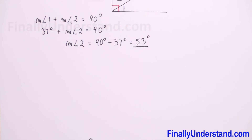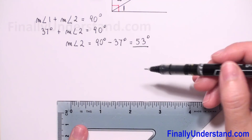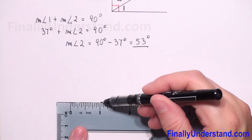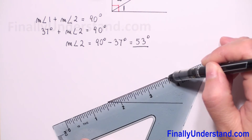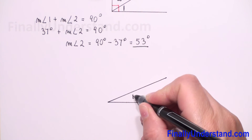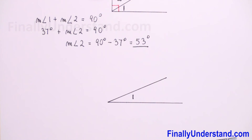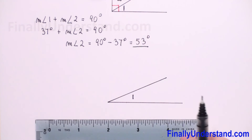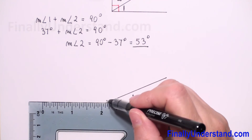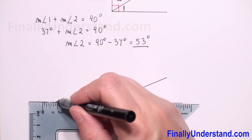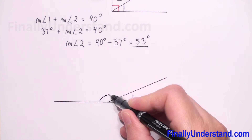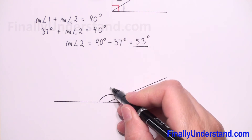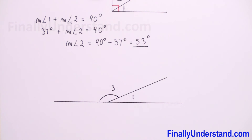Let's draw our angle one again, which has 37 degrees — this is acute. To find the supplement of angle one, we use 180 degrees, which is a straight line. Angle two together with angle one forms the straight line, so this part is our supplement of angle one — let's call it angle three.